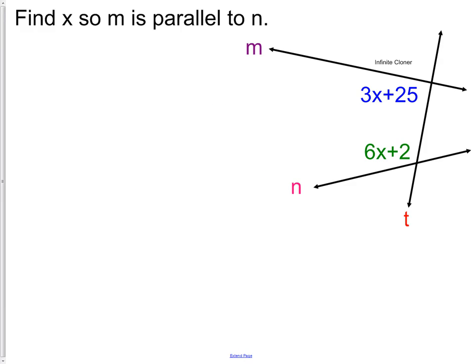We have a picture here. It says find x so that m is parallel to n. So I want this line here m parallel to line n. We're not worried that the picture doesn't look like they're parallel. That really has nothing to do with what we're studying. All we want to do is figure out what can I do to prove this angle here which is 3x plus 25 and this angle here which is 6x plus 2. How could we use those two pieces to prove the lines are parallel? Before we can do anything we must first identify what types of angles they are.